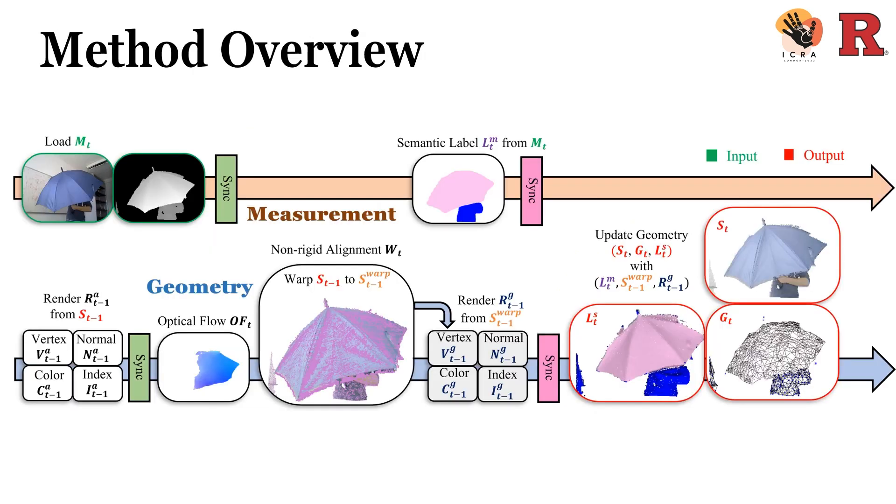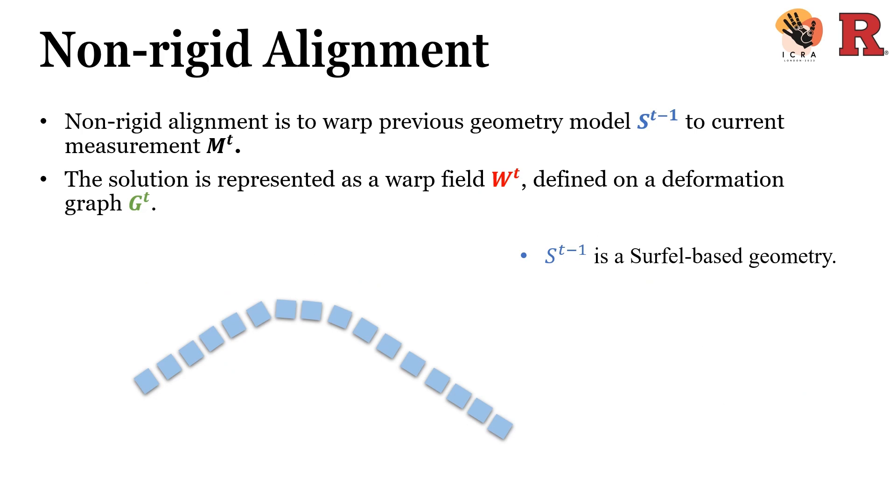This is the whole pipeline of our proposed system. We use a two-thread system. The first thread will pre-process the measurement and perform semantic segmentation. The second thread is focusing on non-rigid alignment and geometry fusion. The main innovation for this work lies in the non-rigid alignment part. Due to time limit, we will mainly cover this part.